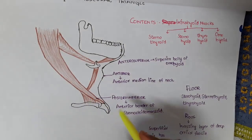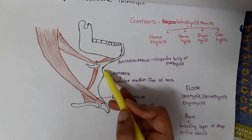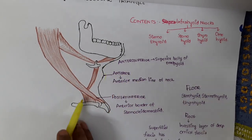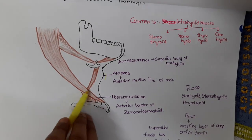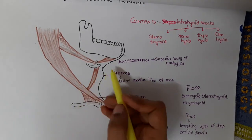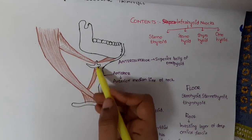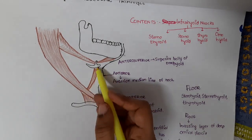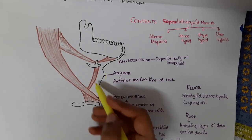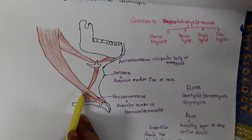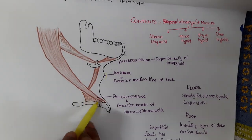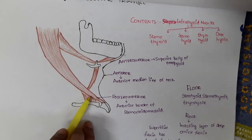The muscular triangle: anteriorly, it is formed by the anterior midline of the neck. Posteroinferiorly, it has the anterior belly of the sternocleidomastoid, whereas superiorly, it has the superior belly of the omohyoid. So, anteriorly: median line of neck; superiorly: superior belly of omohyoid; and posteroinferiorly: anterior border of sternocleidomastoid.